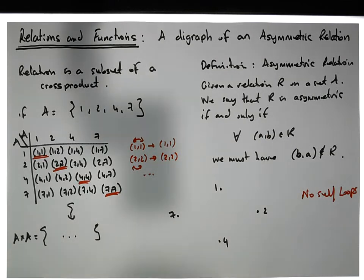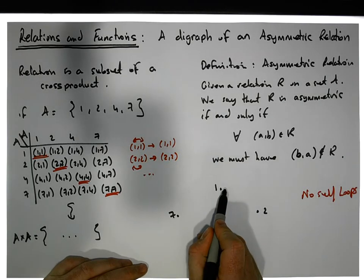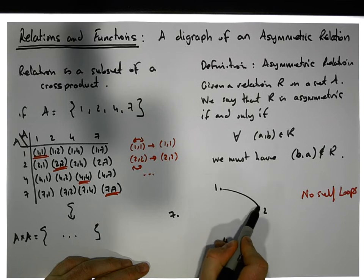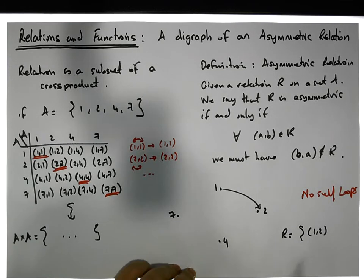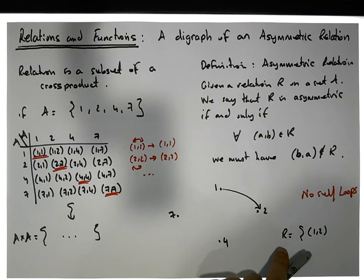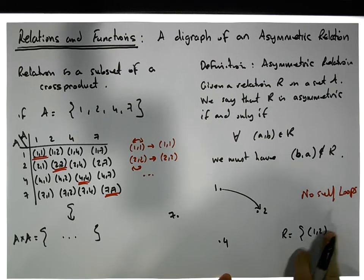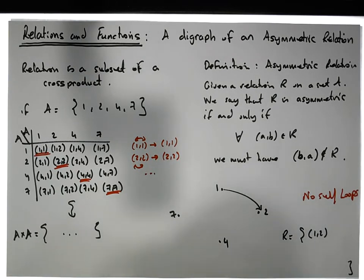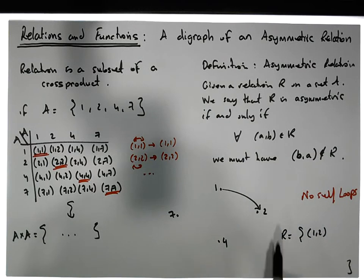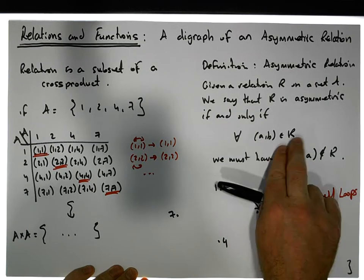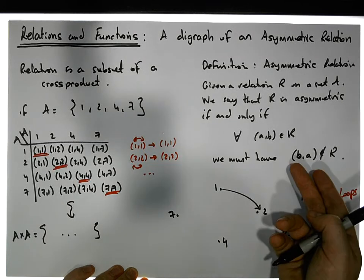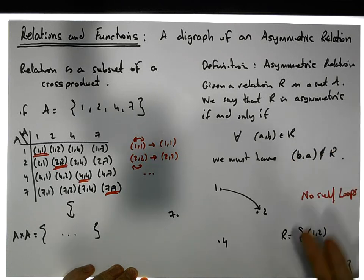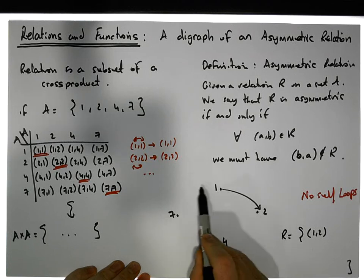We've excluded self-loops. Now let's throw in a single edge from 1 to 2 — so the relation R contains the ordered pair (1,2). Is this relation asymmetric? We take (1,2), flip it to get (2,1), and ask: is (2,1) in R? It's not, so yes, this relation is currently asymmetric.